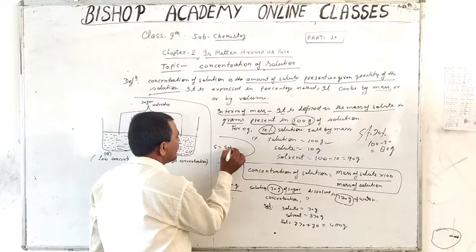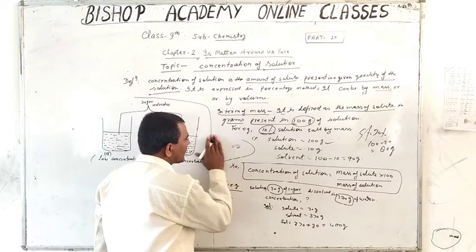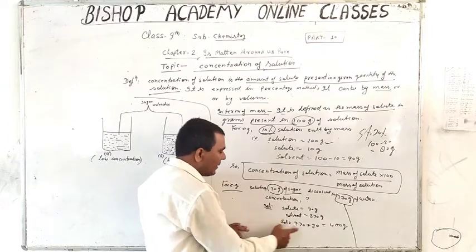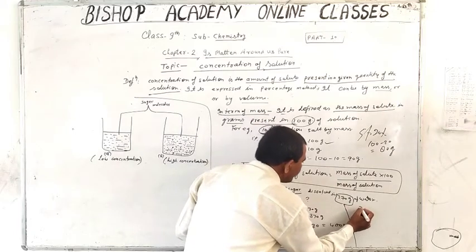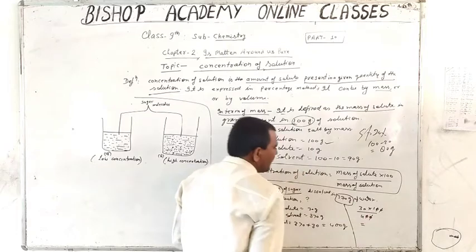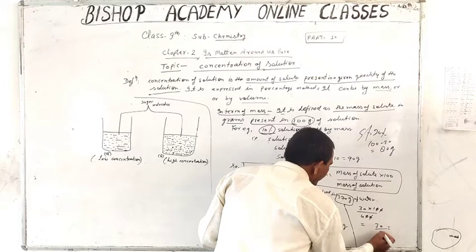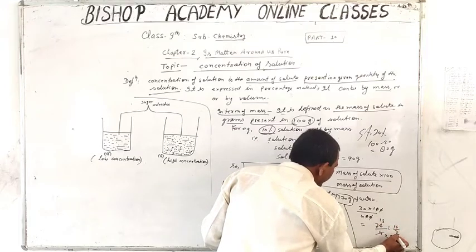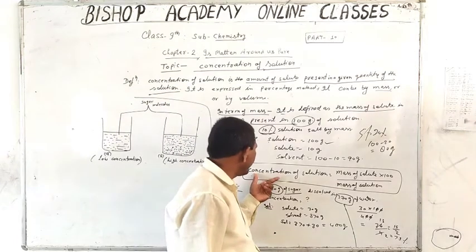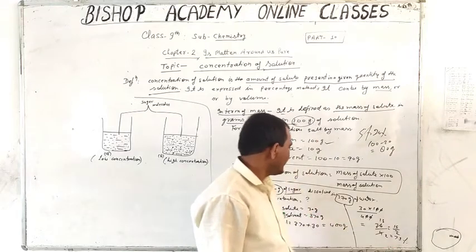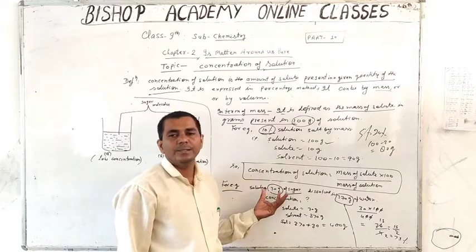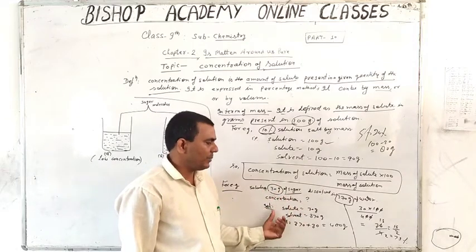So, solution equals solvent plus solute. Now, concentration of solution equals mass of solute upon mass of solution, multiplied by 100. That is 30 upon 400 multiplied by 100, which gives 30 upon 4, equal to 7.5%. So the percentage concentration of this solution by mass is 7.5%.